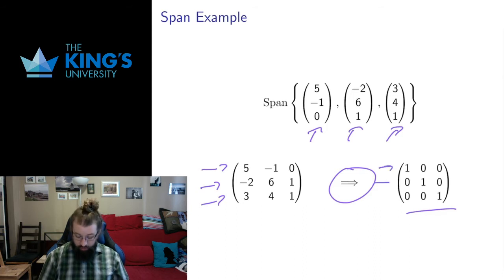This row reduces to the identity matrix. Each row has a leading one, so each vector in this span was necessary, each vector pointed in some fundamentally different direction. So this span is three dimensions, and since this is in R3, the only three-dimensional thing in R3 is everything, so this span was in fact the whole space, has three dimensions.